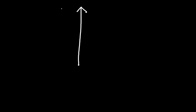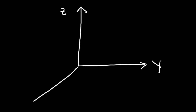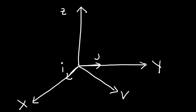Let's begin by drawing a picture. Here we have the z-axis, the y-axis, and also the x-axis. Now let's say we have the vector v in this region. Here is our first unit vector i, j, and the unit vector k.